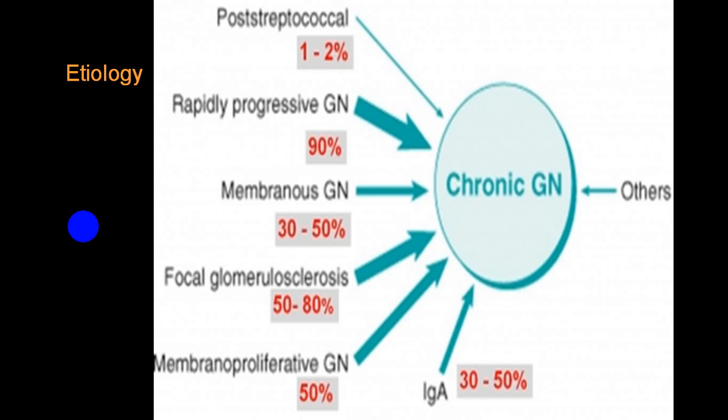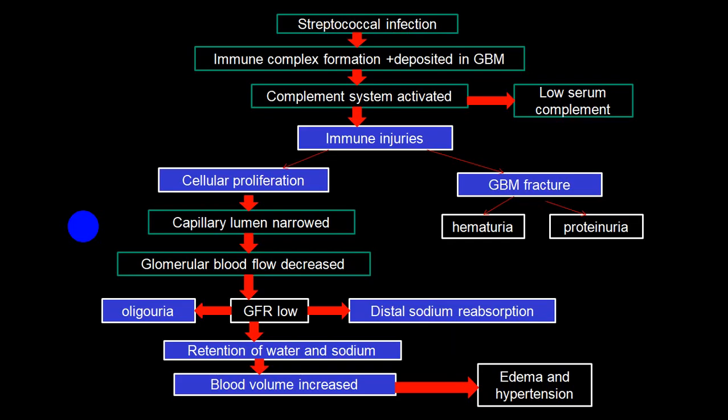Post-streptococcal acute glomerulonephritis can end up as chronic, but the incidence is only one to two percent. With rapidly progressive glomerulonephritis, 90 percent of the time it will go into chronic glomerulonephritis. The membranous variety, focal glomerulosclerosis, membranoproliferative, and IgA variety progress in almost 50 percent — sometimes even 50 to 80 percent — of cases. Some conditions which produce chronic glomerulonephritis are rare.